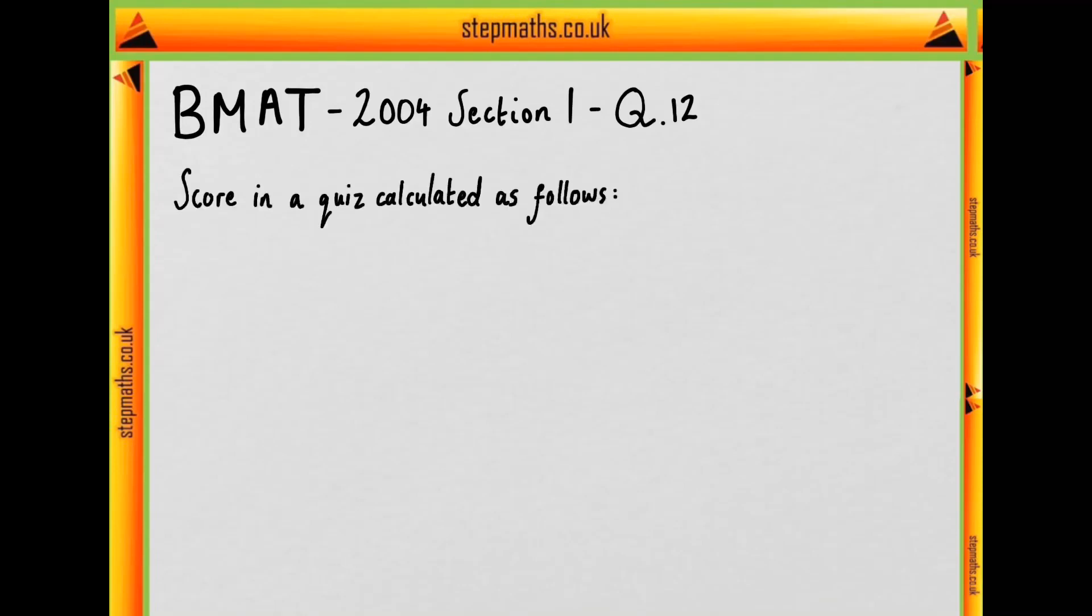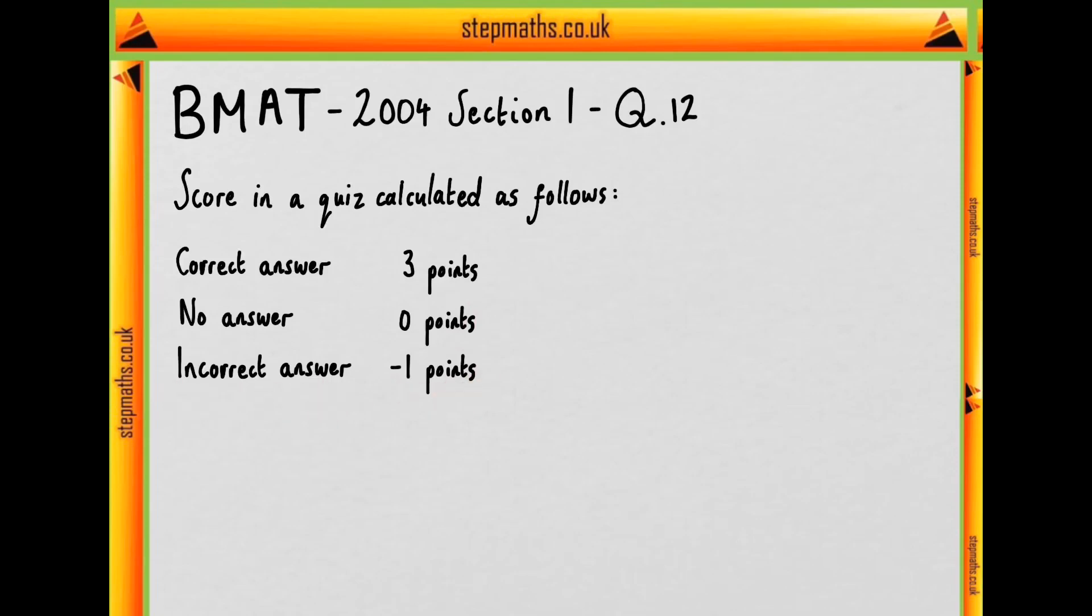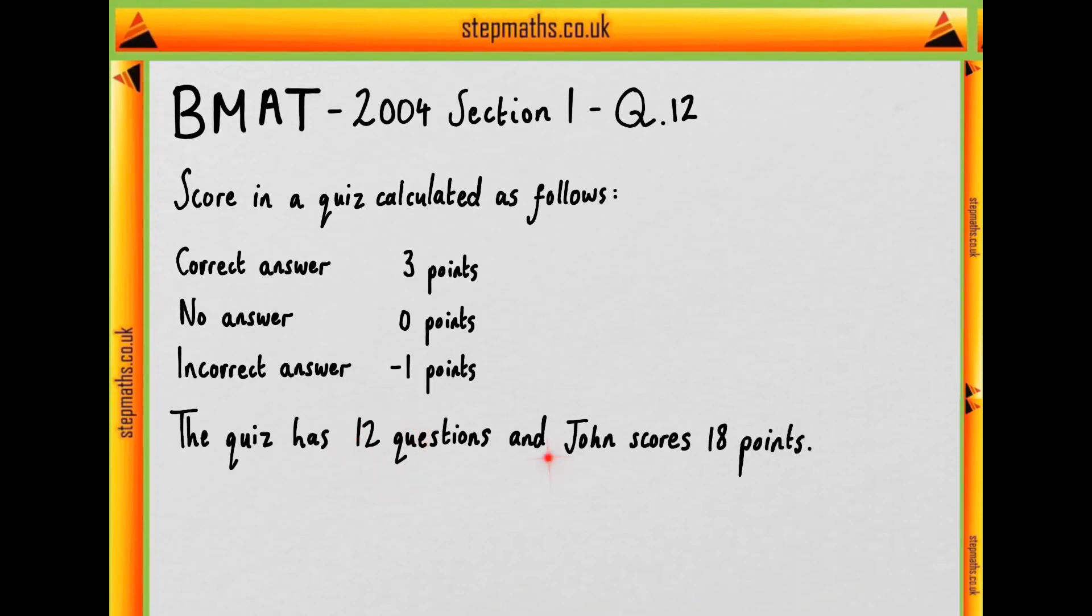In question 12, we're told that the score in a quiz game is calculated as follows: a correct answer gets you three points, no answer gets you zero points, and an incorrect answer gets you minus one point. We're told that the quiz consists of 12 questions and that John scores 18 points.